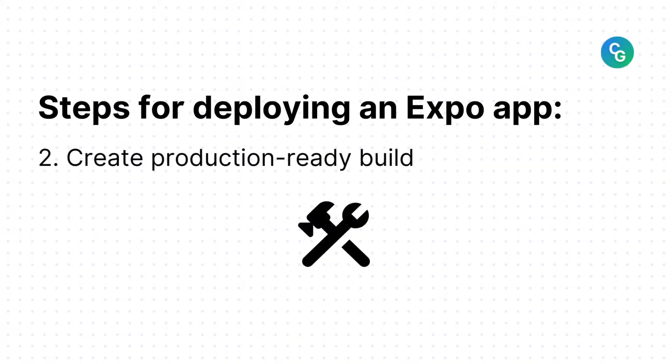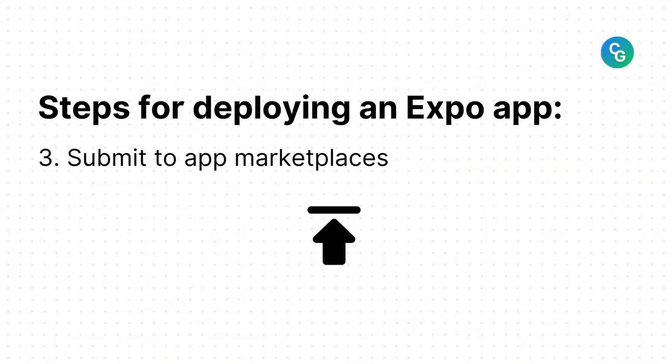Step two is to create a production-ready build — this is the build that your end users will receive. Finally, in step three, you can deploy to app marketplaces with EAS Submit. Note that if you plan on using an ad hoc distribution tool like TestFlight or Google Play beta testing, you should still follow the directions in step three.